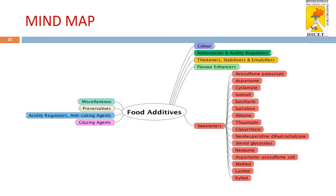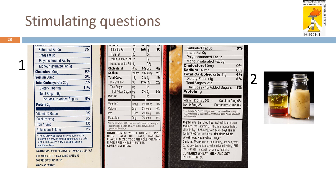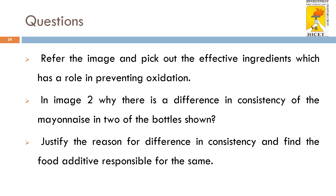In this entire lecture we have seen about food additives: its definition, its classification based on three different categories — source, intention, and prevalence. Here are some stimulating questions: refer to Image 1 and pick out the effective ingredients which have a role in preventing oxidation. In Image 2, why is there a difference in the consistency of the mayonnaise in the two bottles shown? If you have understood the lecture, you will be able to differentiate and reason for the difference in consistency and find the additive responsible for the same.